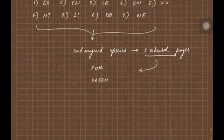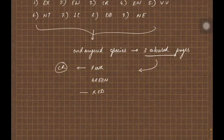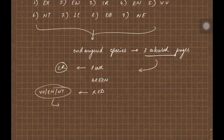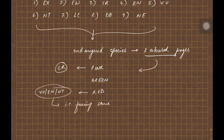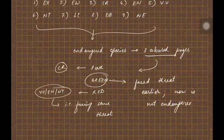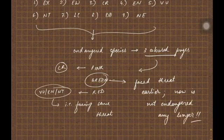These endangered species are located in three colored pages of the Red Data Book. The first color is pink, the second is green, and the third is red. Pink has species which are critically endangered, red has species facing some threat like vulnerable, endangered, or near threatened. Green consists of species which faced threat earlier but now they are not endangered any longer.